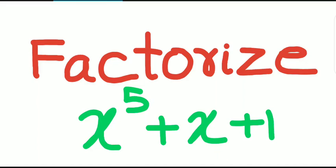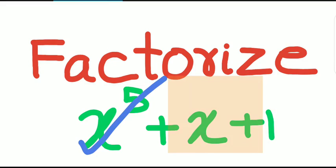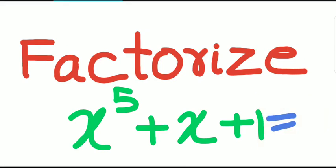Let us factorize x to the power 5 plus x plus 1. So we want to factorize this polynomial of degree 5. However, we see that it is not equal to 0 for x equal to 1, or x equal to 0, or x equal to 2, and so on. So we don't seem to have any trivial factors like x plus 1, x minus 1, x plus 2, or x minus 2.